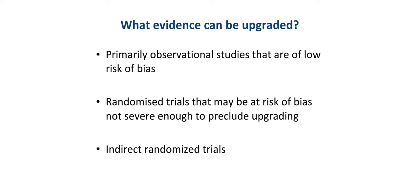What type of evidence can be upgraded, and what are the factors that lead to upgrading the quality of evidence? Primarily, observational studies that are of low risk of bias should be upgraded if one of the upgrading factors applies. However, there are exceptions. Randomized controlled trials that may be at risk of bias — for instance, because randomization may not have taken place appropriately — could be considered observational studies due to the lack of appropriate randomization, and therefore should not be precluded from upgrading if the risk of bias is not severe enough. A body of evidence from randomized trials considered indirect for a certain population could still be upgraded if the effects were very large or if there were dose-effect relations.